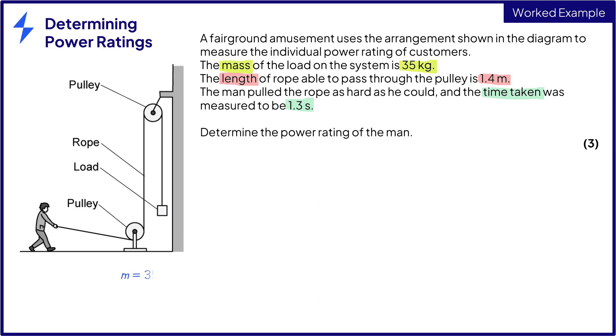So we know the mass is 35 kilograms and we know the length of rope passing through the pulley which is the distance at 1.4 meters and we know the time taken which is 1.3 seconds. So let's clear a bit of space.